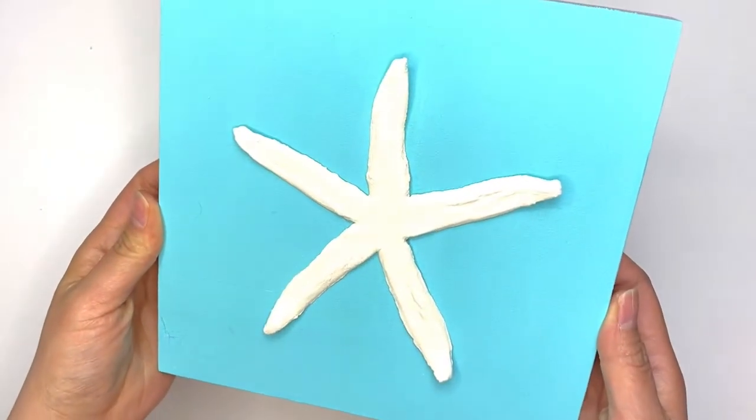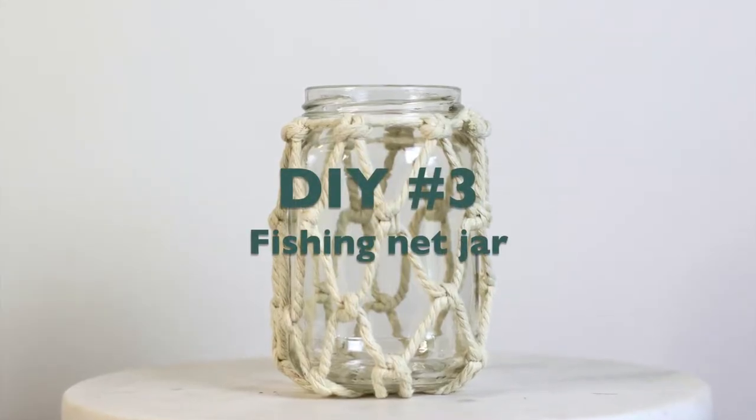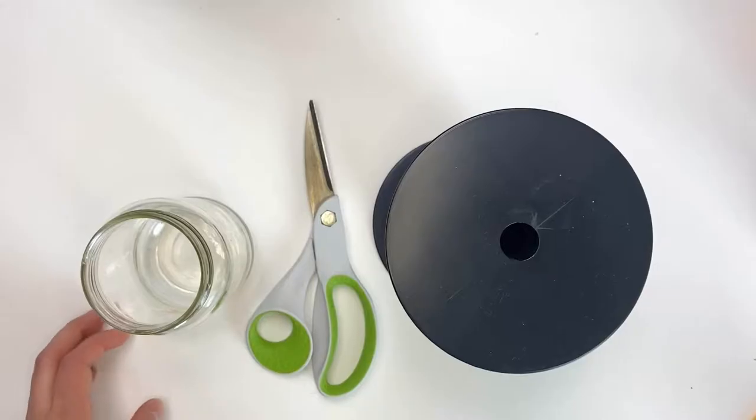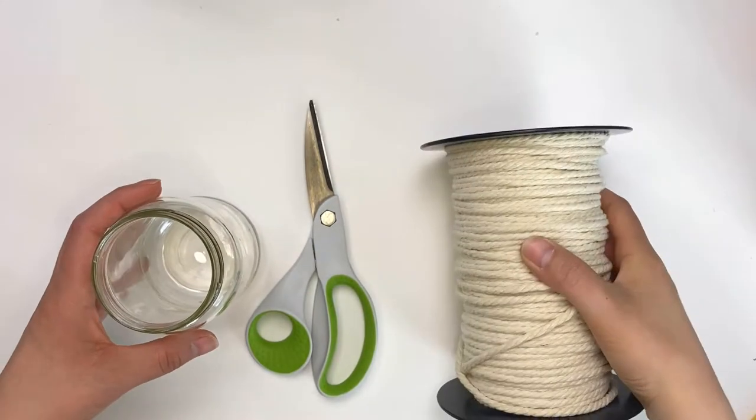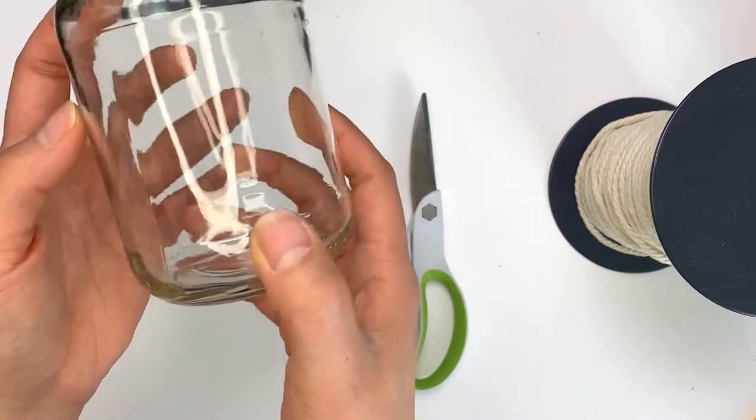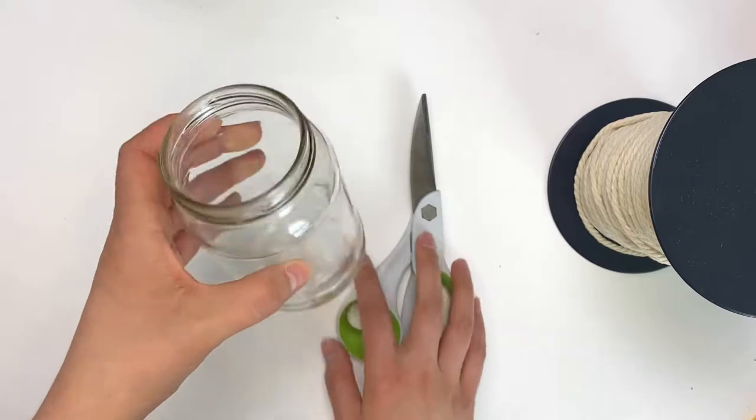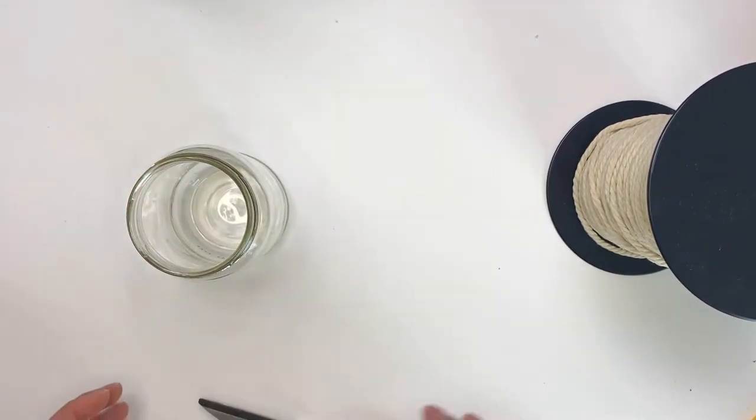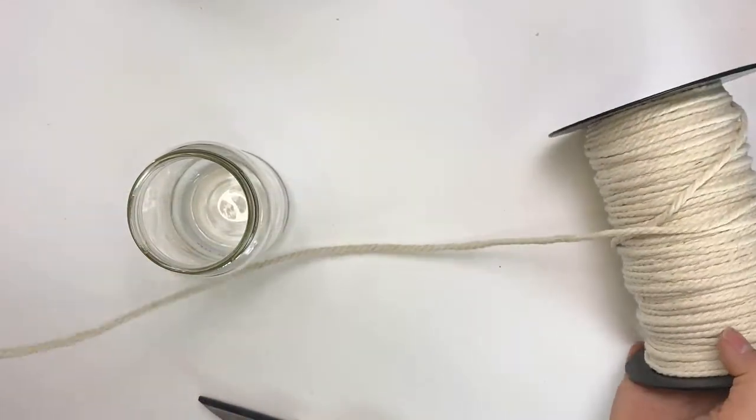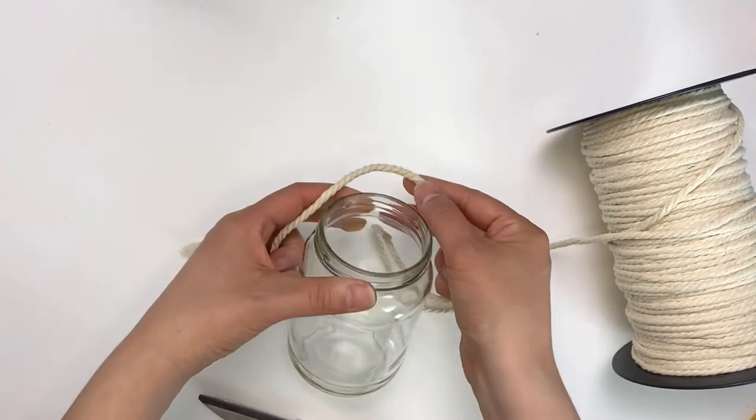Our third DIY is this adorable fishing net jar that I made using a recycled pickle jar. So for this project you will need a jar and some four millimeter macrame cord. Now the jar can be a mason jar—I use a pickle jar although it was really hard to take off the labels, but with some boiling hot water and soap I was able to get all of the sticker stuff off. So to start off, what you want to do is grab a piece of macrame cord and tie it around the rim of your jar, making sure it's not too tight because we are going to be attaching other strings to it.